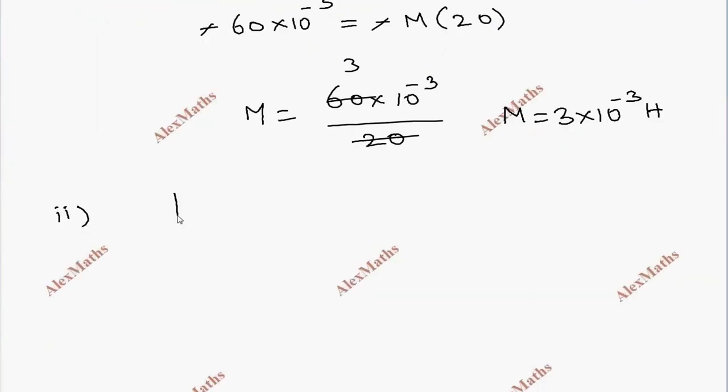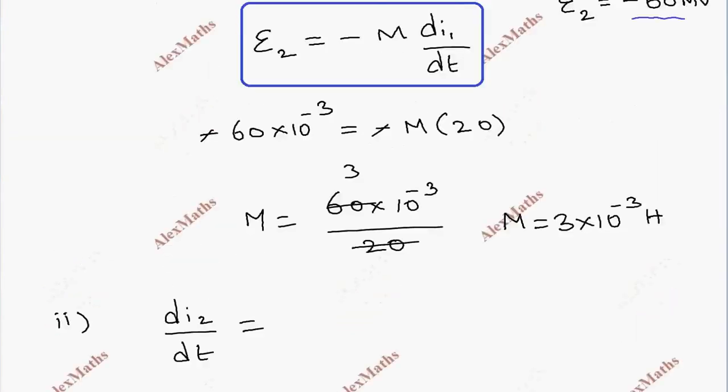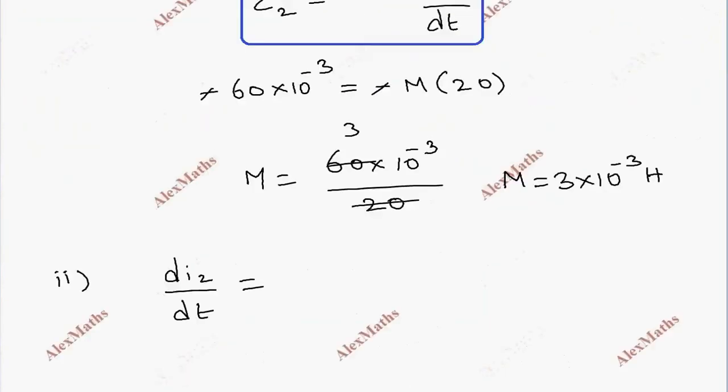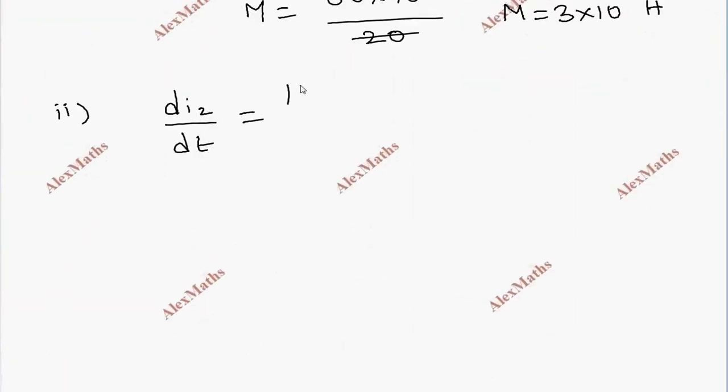Current change di2 by dt. 4A to 16A in 0.03 seconds. So, 16 minus 4 divided by 0.03. 12 by 0.03. This is 400 amperes per second.